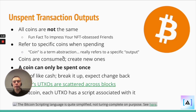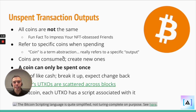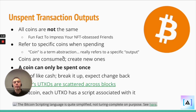Unspent transaction outputs — this is a system in which all coins are not the same. A cool fun fact to impress your NFT-obsessed friends: the first NFT collection technically is Bitcoin, because all Bitcoins are non-fungible tokens based on the UTXO model.